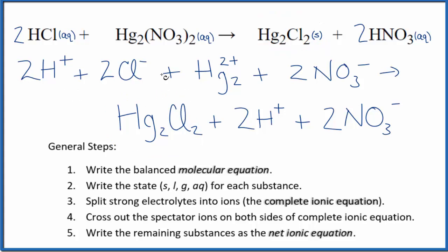So this is the complete ionic equation and note we didn't split the solid apart. Here's the problem that people have with this particular net ionic equation. When you look at mercury one nitrate, the mercury one ion is Hg₂²⁺.